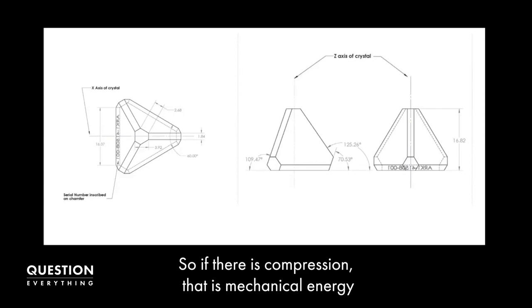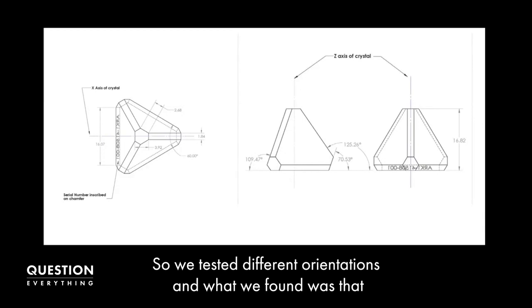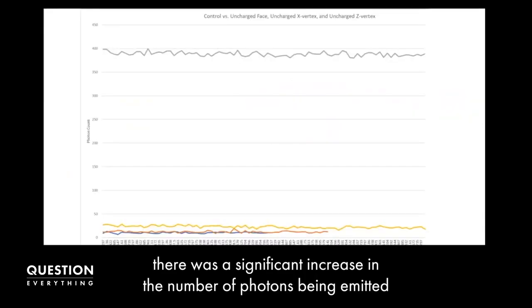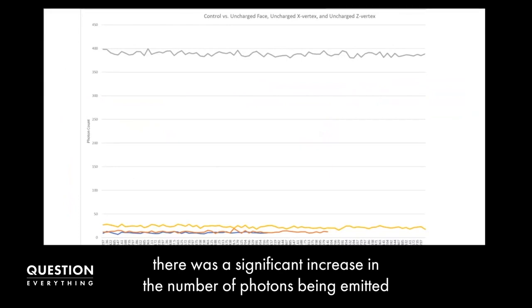If there's compression, mechanical energy along the x-axis, it will generate an electrical current. Conversely, if there's an electrical current, it'll cause acoustic oscillations of the crystal. We tested different orientations and found that there was a significant increase in the number of photons being emitted from the vertices, the points of the tetrahedron.